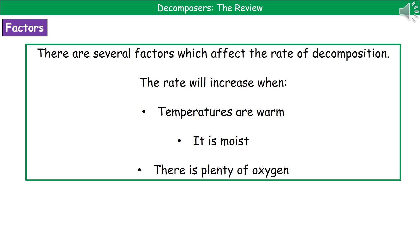Conditions also need to be moist, because a certain amount of water must be available — without water, those reactions won't take place. Finally, plenty of oxygen must be available — aerobic conditions — because that allows the microorganisms to respire and carry out decomposition. Without oxygen, in anaerobic conditions, most forms of decomposition are prevented. So to increase the rate of decomposition: warm temperatures, moist conditions, and aerobic conditions.